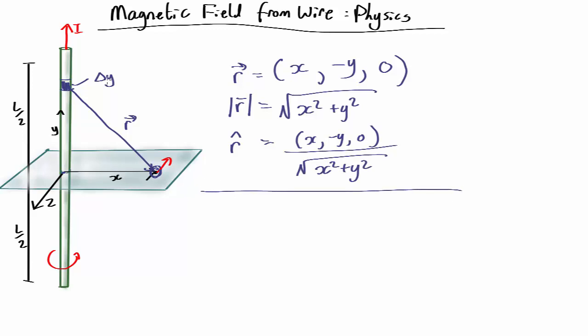How about a length element, our delta l? Our delta l is just delta y. So delta l, the little bit of length that's vector along the length which the current is going, is just equal to delta y.